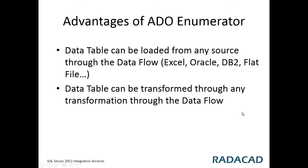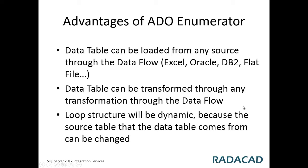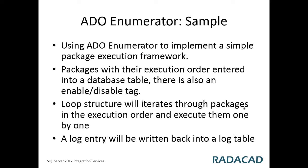Any kind of transformation, including data cleansing, can be applied before loading into the Recordset Destination. The loop structure will also be dynamic because of the nature of the ADO enumerator, which works with a data source such as a database or flat file. When that source changes, the loop structure and loop iterations will change accordingly.